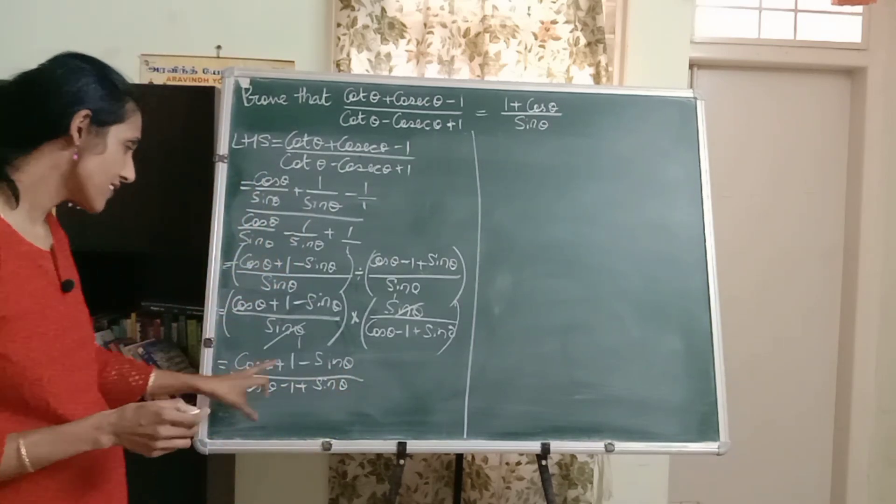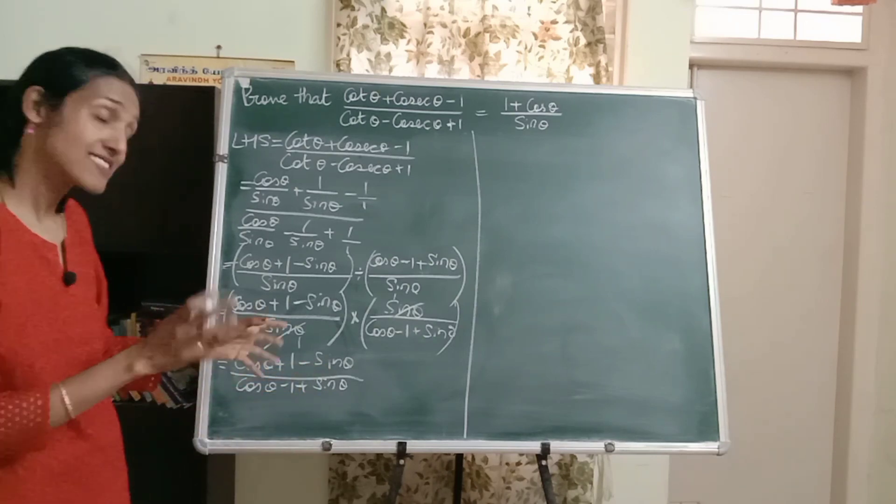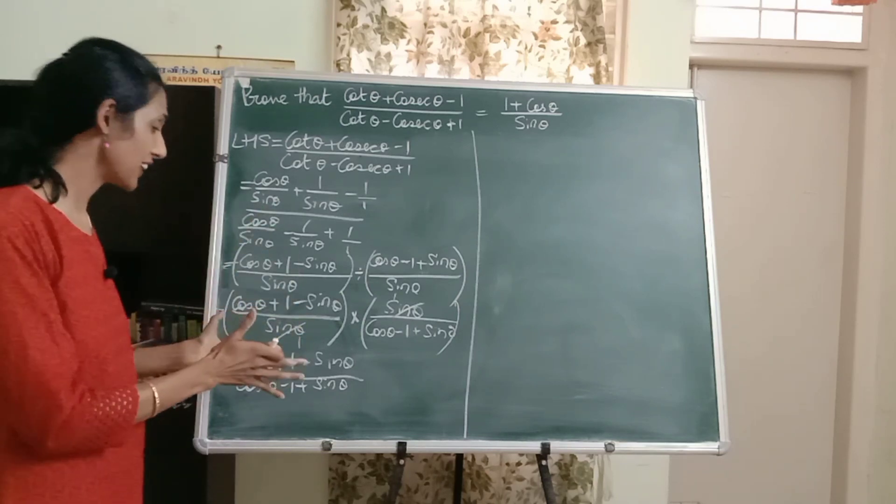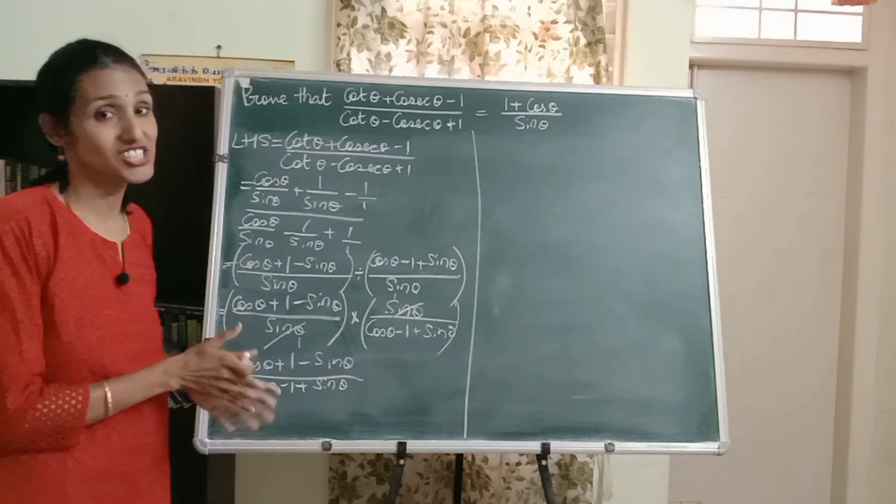Now the good thing is that we've got everything in terms of sine and cos, which is what we want, but still further simplification is needed. Whatever identities we have, all are sine square and cos square. So somehow I need to bring sine square, cos square here. Then further simplification can be done.